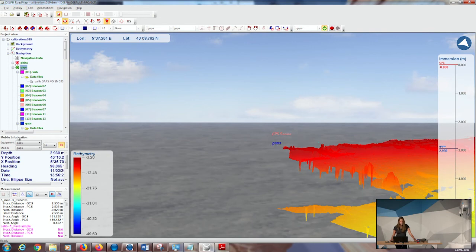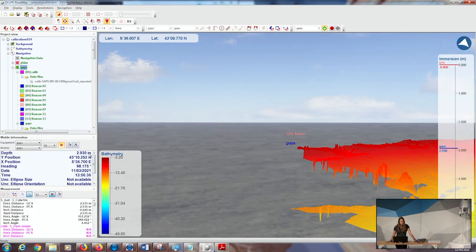Here, on mobile information, I can also read in real time a few information coming from the GAPS as the depth, the position, the heading, the date and the time.